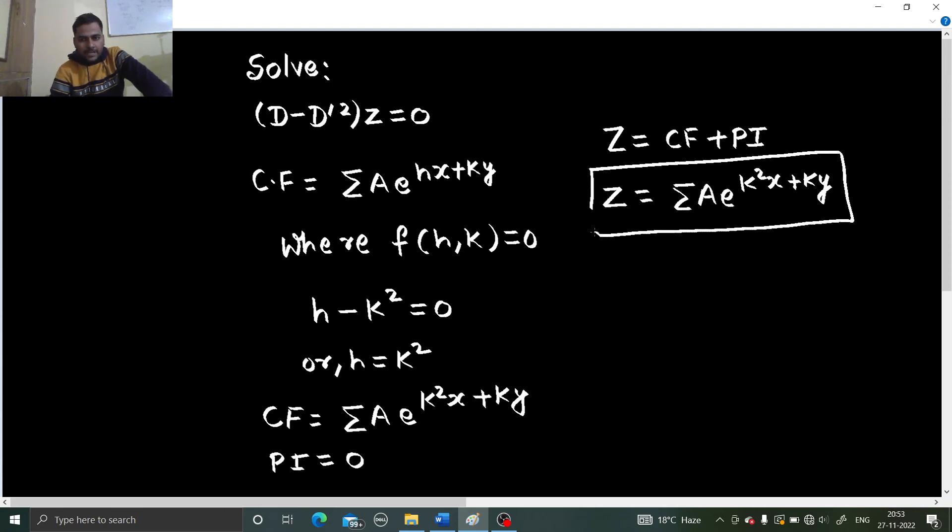Again, a bit different if you do not know how to, because this is not factorizable. In that case, how can we find cf? We have a straightforward way a e power hx plus k y. This relation is there which you can get by putting d as h and d dash as k. Find h or k in terms of each other, h in terms of k or k in terms of h, put them back and get your complementary function easily.